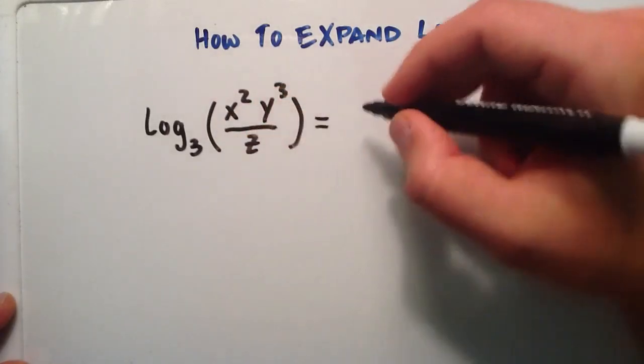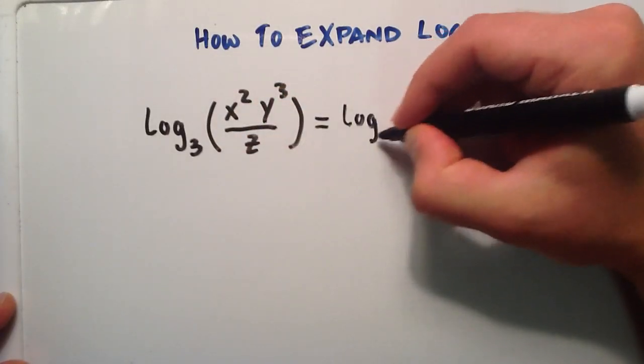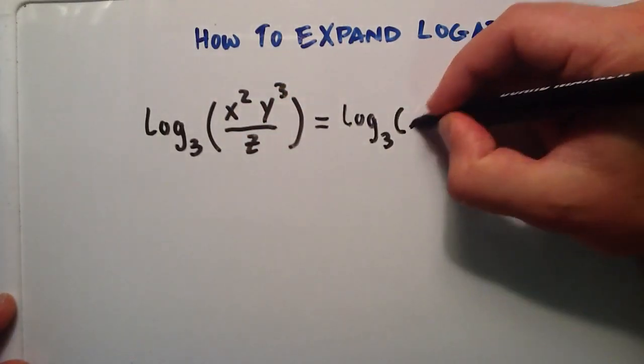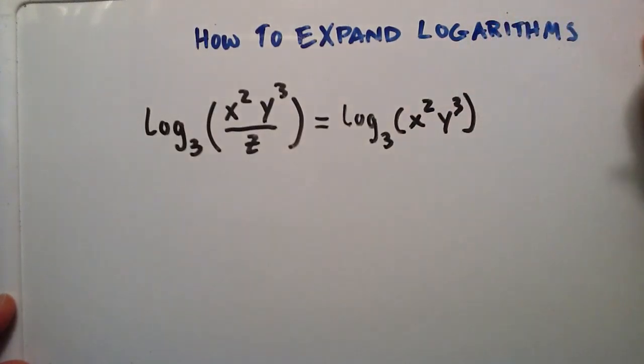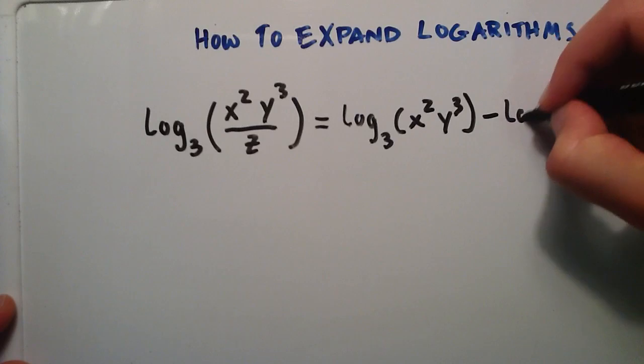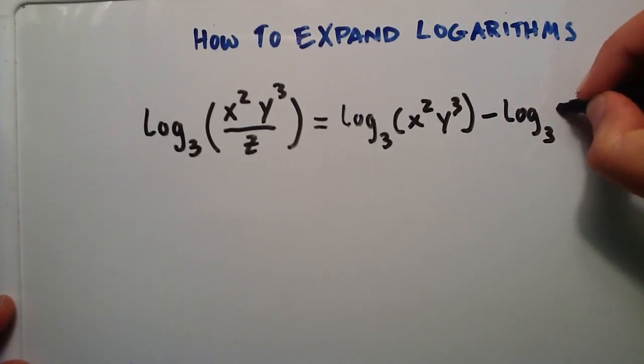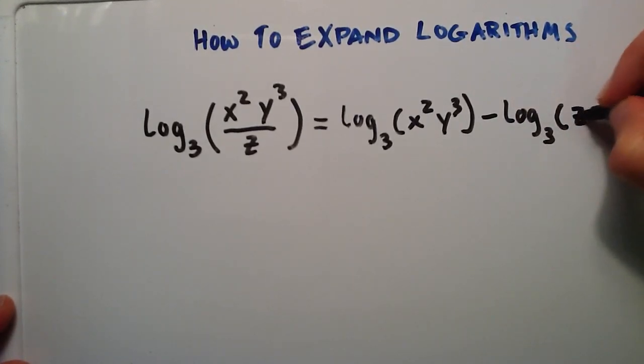So log base 3 of all this stuff is equal to log base 3 of the numerator. So our numerator is what's on top, x squared and y to the third, and minus log base 3 of our denominator, and the denominator is what's on bottom, which is our z.